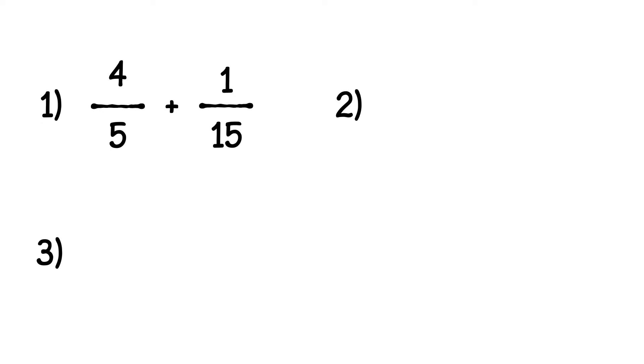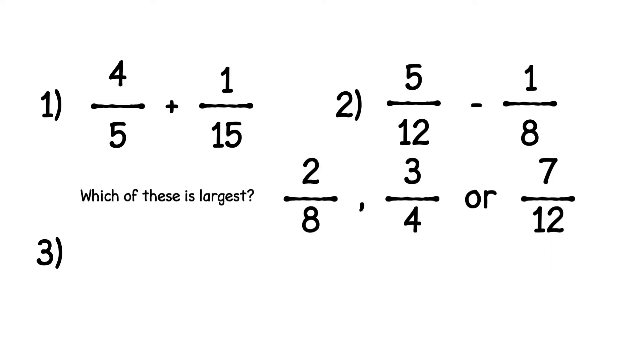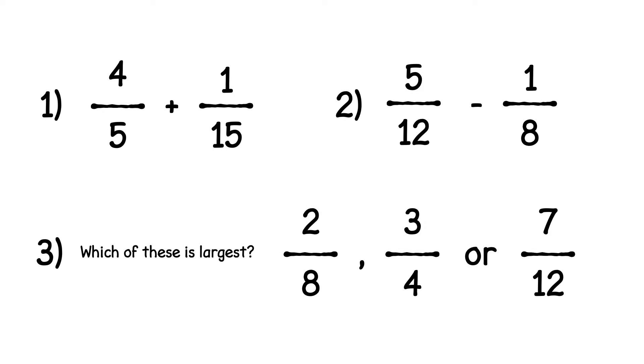Four-fifths plus one-fifteenth, five-twelfths minus one-eighth, and comparing or ordering fractions all have one thing in common. You can't work them out until all the fractions have been given a common denominator.